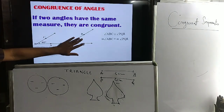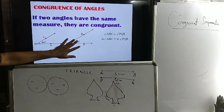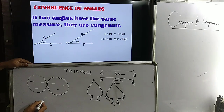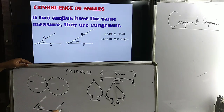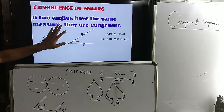If two angles are of equal measurement — this is 40 degrees and this is 40 degrees, or suppose this is 60 degrees and this is 60 degrees — then the two angles are said to be congruent.